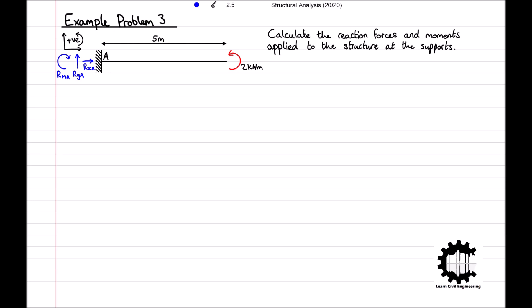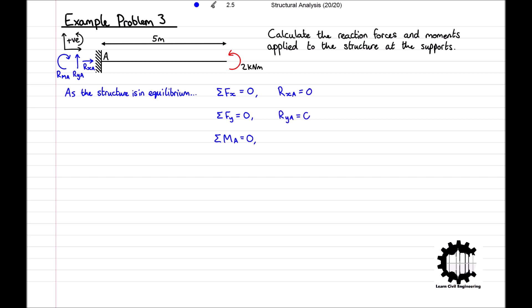With all forces defined, to calculate the reactions we apply the equilibrium conditions. The sum of all horizontal forces equals Rxa, which equals zero. The sum of all vertical forces equals Rya, which equals zero. Considering moments at point A, we have 2 minus Rma equals zero, giving Rma equal to 2kNm. We conclude that there are no reaction forces applied to the structure, but there is a reaction moment of 2kNm at point A acting in a clockwise direction, balancing the applied anti-clockwise moment.